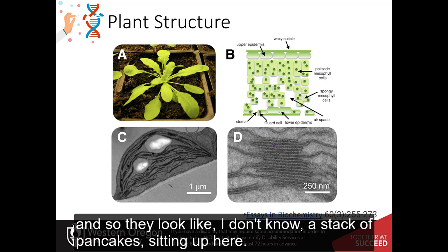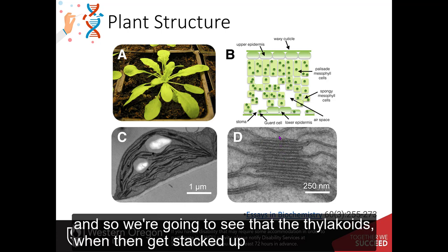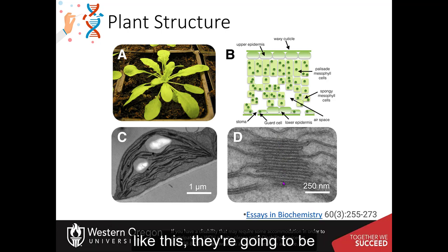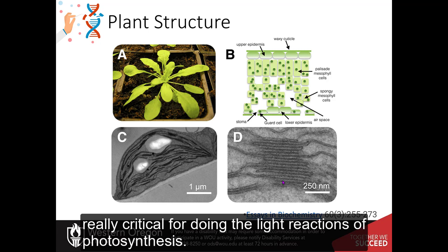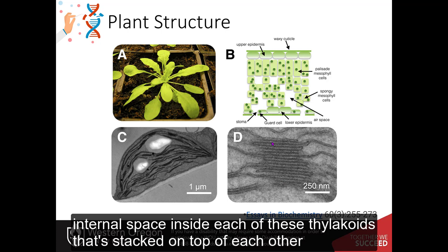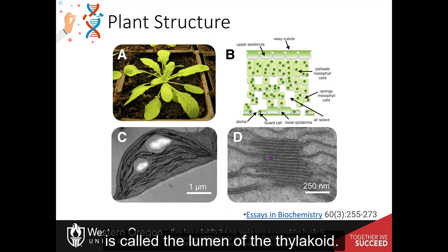And so they look like a stack of pancakes sitting up here. And so we're going to see that the thylakoids, when they get stacked up like this, they're going to be really critical for doing the light reactions of photosynthesis.